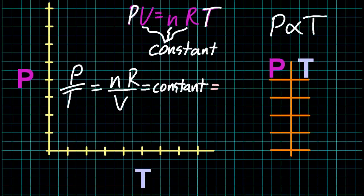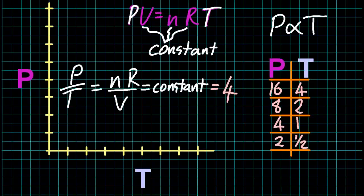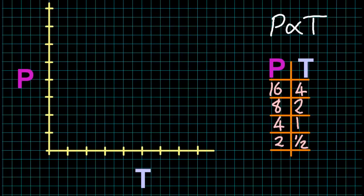Alright then, I'm going to choose a constant. I'll say, I don't know, 4. So let me give some data here. 16 over 4 is 4. 8 over 2 is 4. 4 over 1 is 4. And 2 over a half is 4. Okay, so that data fits with the equation.